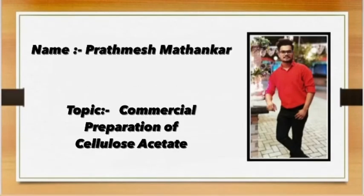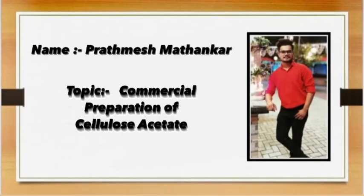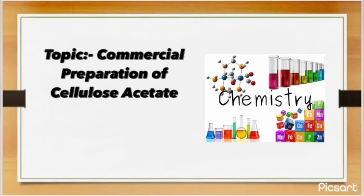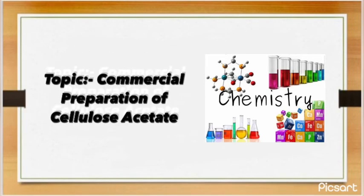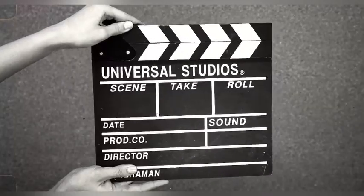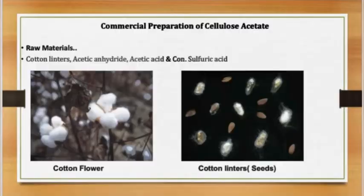Hello friends, I am Prathamesh Mathankar and you are watching Technical Knowledge with Engineers. Today we are going to discuss about commercial preparation of cellulose acetate. So let's start. The raw materials used for the preparation of cellulose acetate are cotton linters, acetic anhydride, acetic acid, and concentrated sulfuric acid.